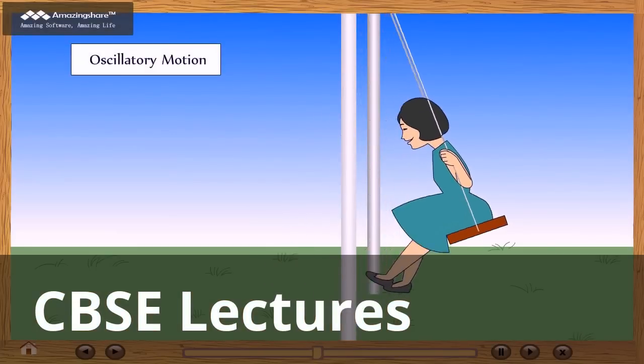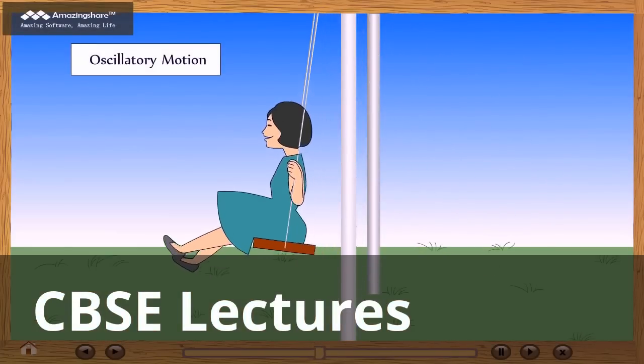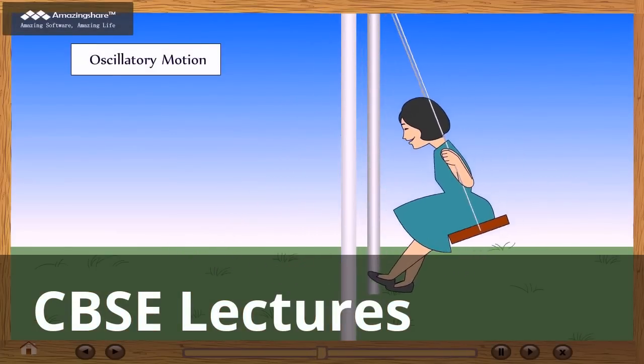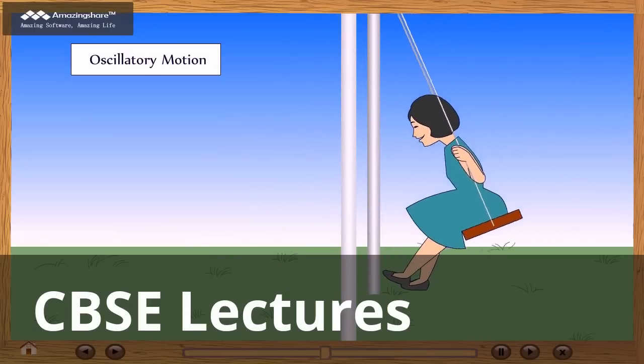No. 4: Oscillatory motion - to and fro motion of an object. For example, motion of swing.